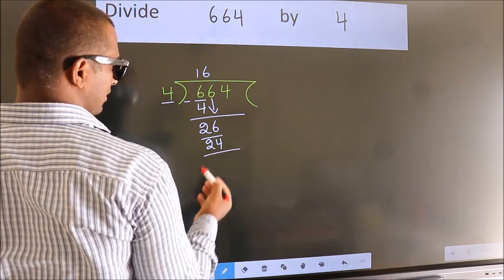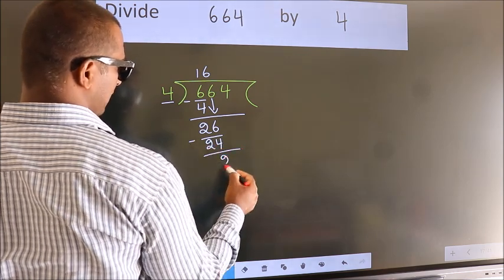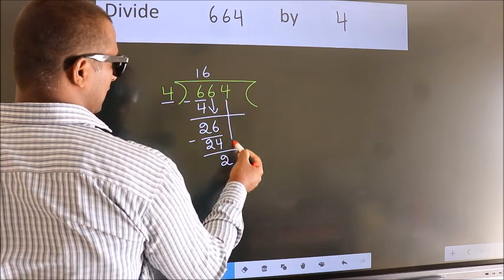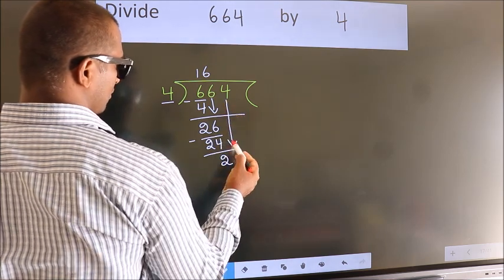Now, we subtract. We get 2. After this, bring down the beside number. So, 4 down.